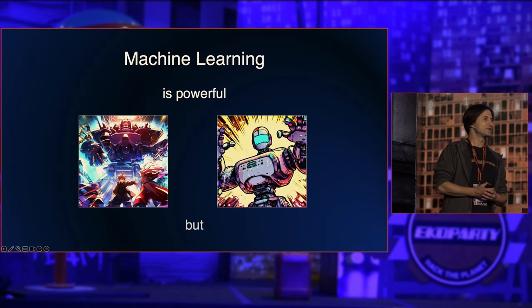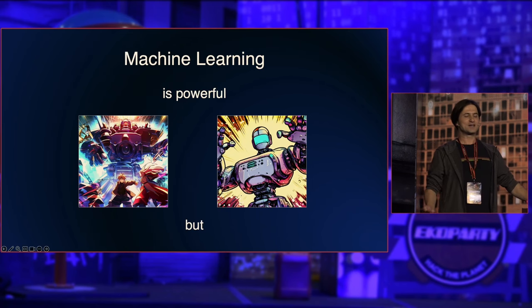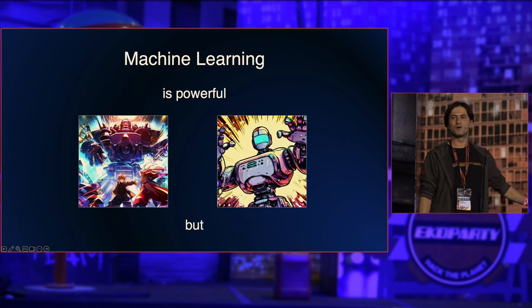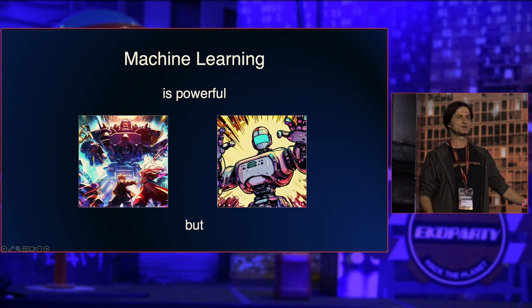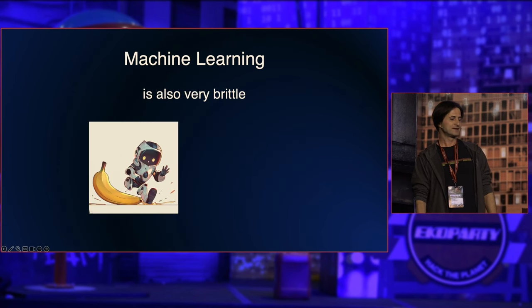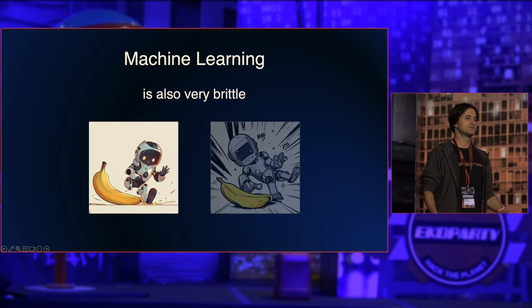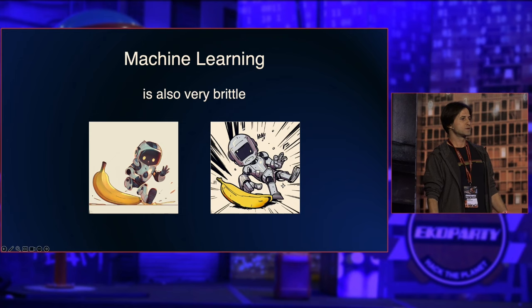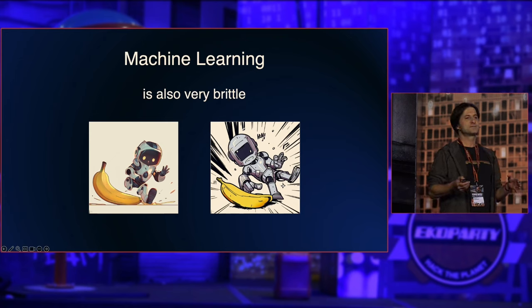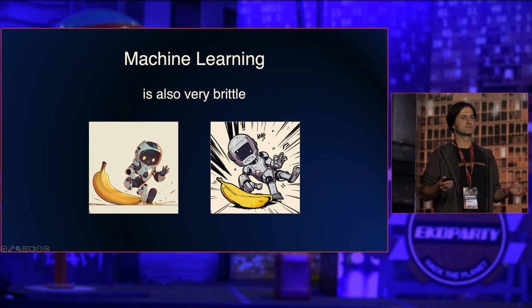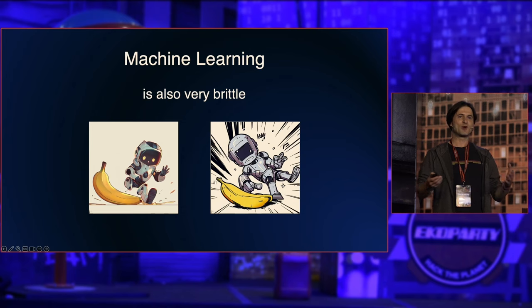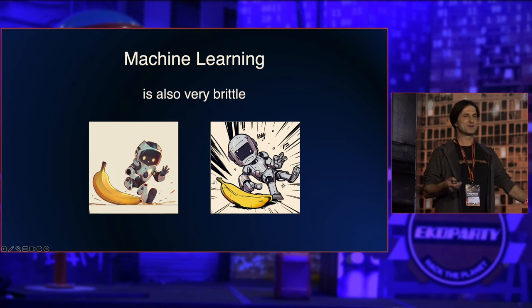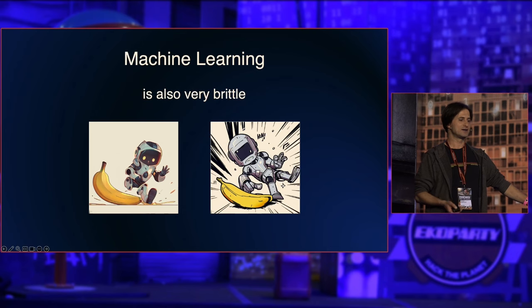The one thing I really want you to take away from this talk is that machine learning is really powerful — it has tremendous capabilities and is able to do really powerful tasks. But it is extremely brittle, meaning it breaks really easily. Machine learning just breaks; it might misclassify something, or with prompt injections and ChatGPT, you might see hallucinations. It's very brittle, especially if there is an adversary in the loop.